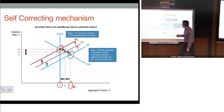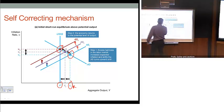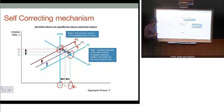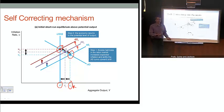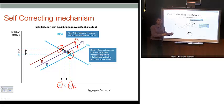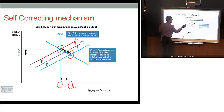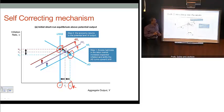Once we get to that point, we'll just stop there. There's no reason for anything else to happen unless there are other shocks to the economy or other changes in policy. We're just going to sit at that equilibrium point three.